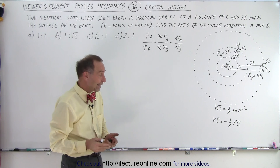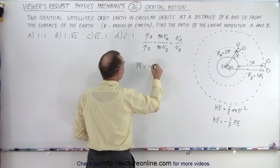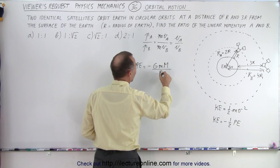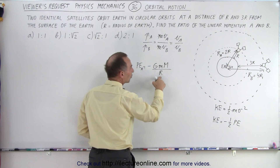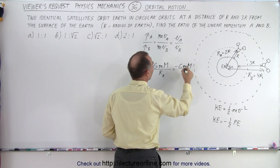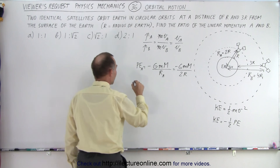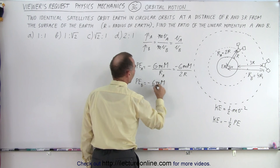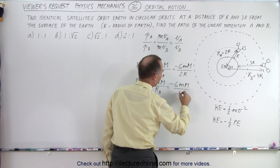The next step is to find the potential energy of each satellite. The potential energy of a satellite in orbit equals minus the gravitational constant times the mass of the satellite times the mass of the Earth divided by the radius. For satellite A, using radius RA = 2R, the potential energy of A equals −GmM over 2R. For satellite B, using radius RB = 4R, the potential energy of B equals −GmM over 4R.